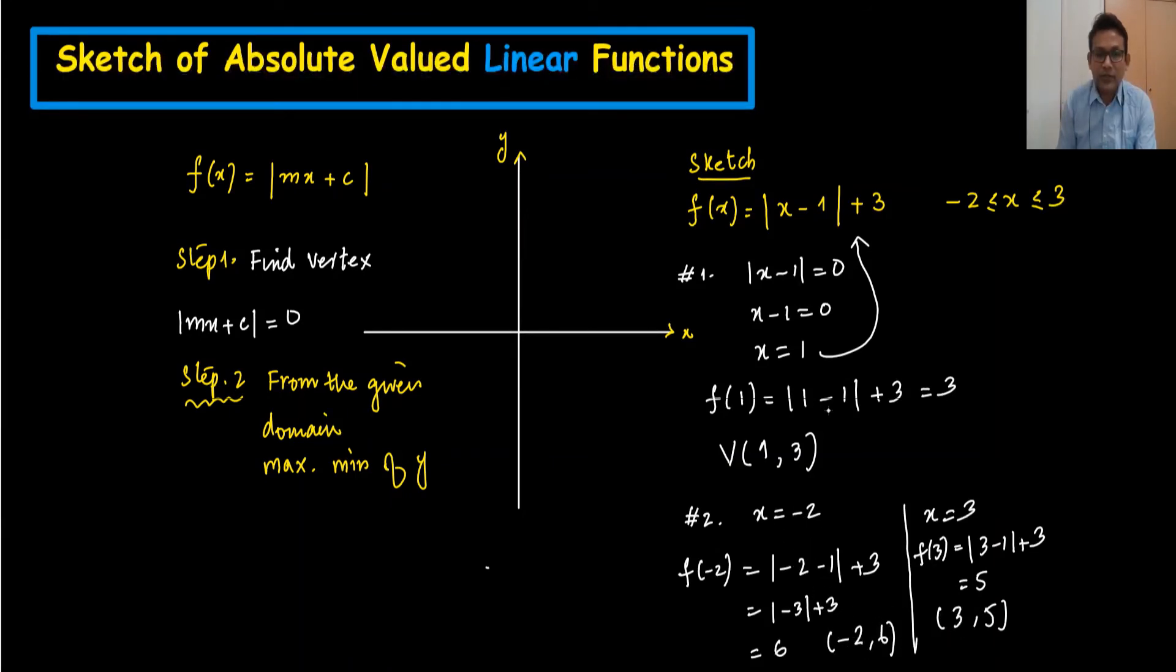Minimum is minus 2. x is minus 2, I can write x is minus 2 here. Minimum value. And the maximum x is 3. So you can write as the domain is given. You can check in the domain. The domain is given.